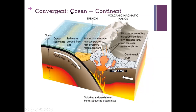In convergent ocean-to-continental subduction, the denser oceanic crust is forced down below the lighter continental crust, where it re-melts. The hot magma rising from the friction of that oceanic plate subduction moves up through the mantle and crust, creating mountain building and volcanoes.